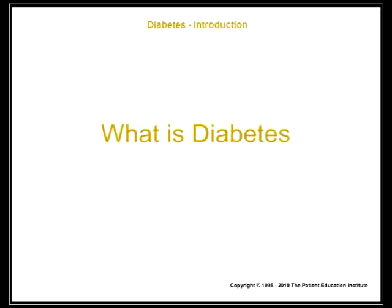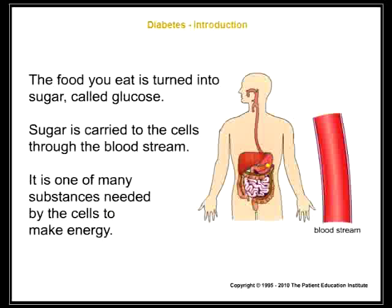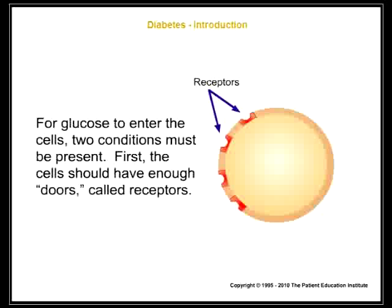What is diabetes? The body is made of millions of cells that need energy to function. The food you eat is turned into sugar, called glucose. Sugar is carried to the cells through the bloodstream. It is one of many substances needed by the cells to make energy. For glucose to enter the cells, two conditions must be present.